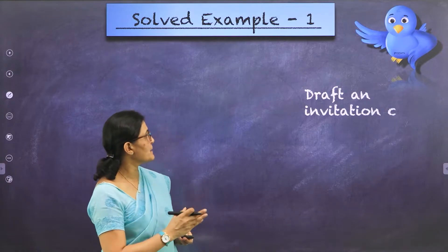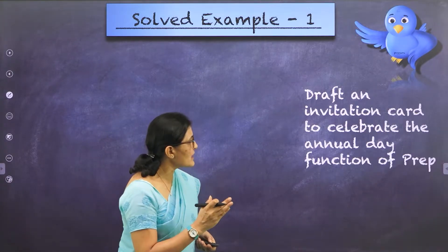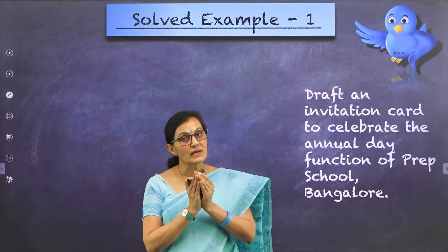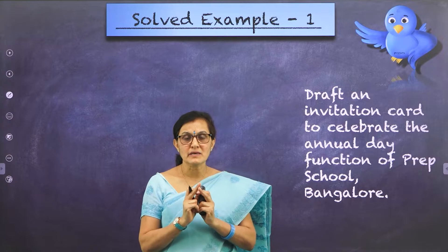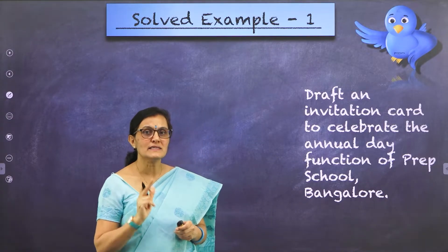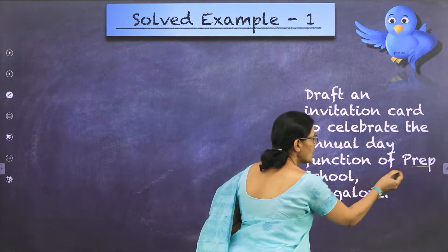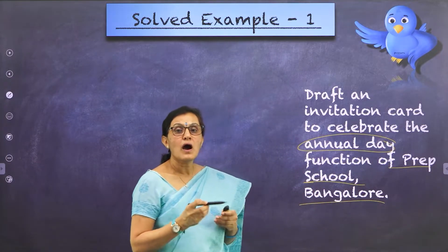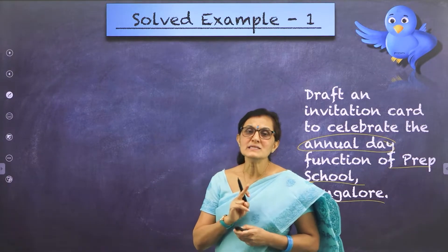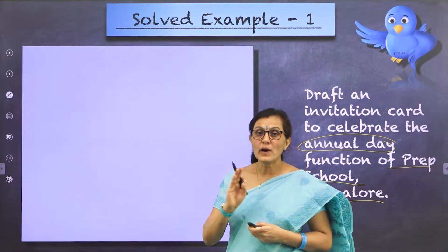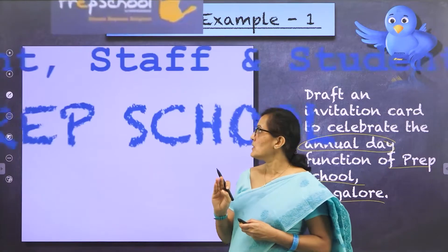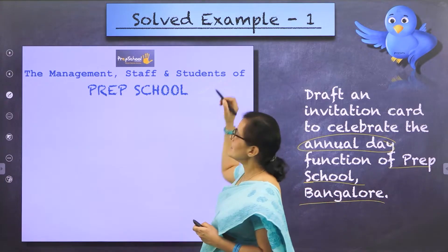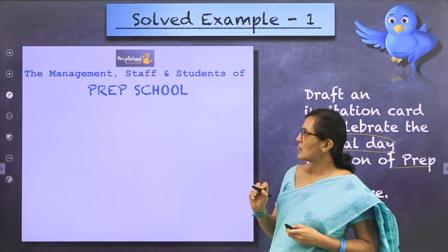Let's look at the first example. When you read and understand the question, you understand that it is a formal invitation because it's for a school and it is for annual day celebration. Which is the school? It is Prep School, Bangalore. And what are you writing the invitation for? It is for an annual day. How are you going to write the invitation? We always start with a box. Once your box is put, you have to put the school name and the logo — which is optional.